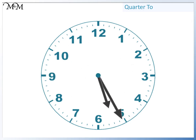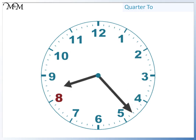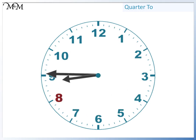Next we'll start at eight o'clock. From here the minute hand moves around to nine. This means that it's quarter to. The next hour that the hour hand will reach will be nine. So the time is quarter to nine.